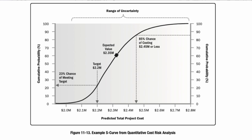Here is an example of what that output looks like, based on cost. The targeted budget was 2.2 million USD for the project. The analysis said there is only a 23% chance of meeting that target. However, there is an 85% chance of meeting a cost of 2.4 million or less. Monte Carlo iterations give you a confidence level — similar to a weather forecast saying there's a 50% chance of rain today, based on a lot of data and permutation combination.